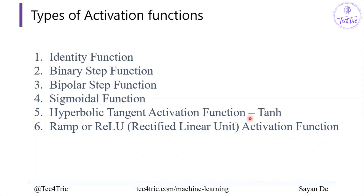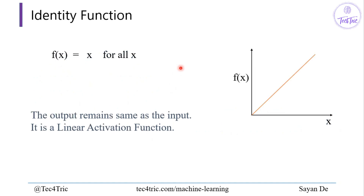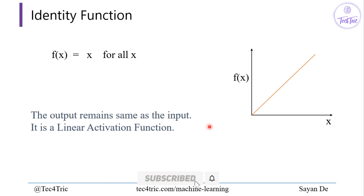There are two basic types: linear activation function and non-linear activation function. The first one — the identity function — is the linear activation function, and the rest are non-linear. The identity function simply means the output remains the same as the input: f(x) = x for all x.